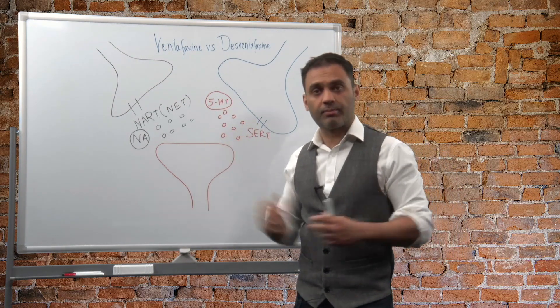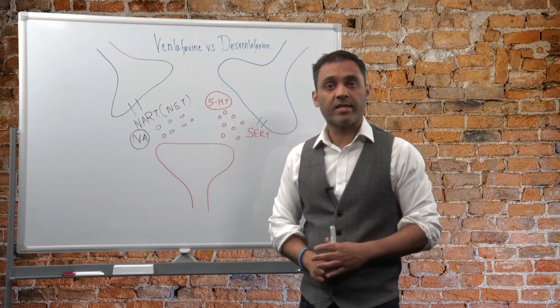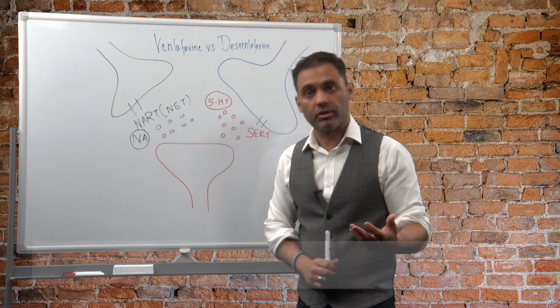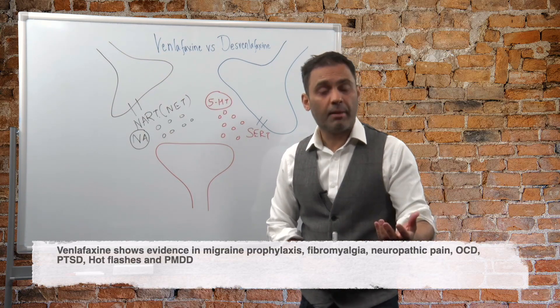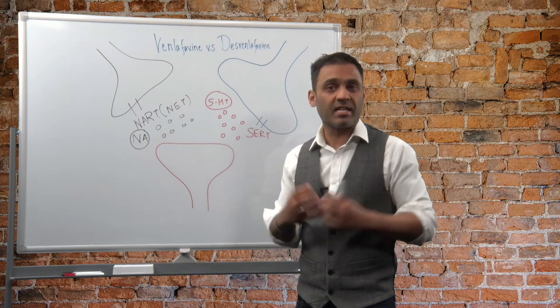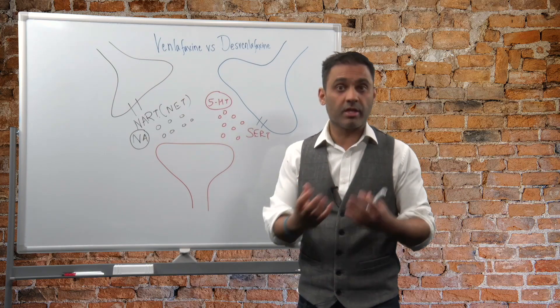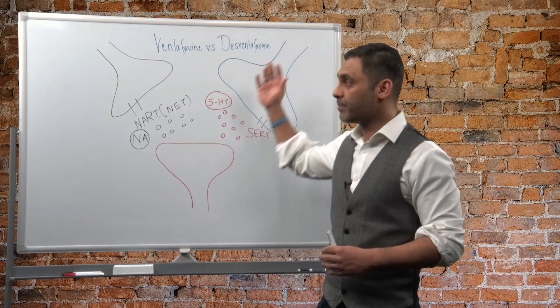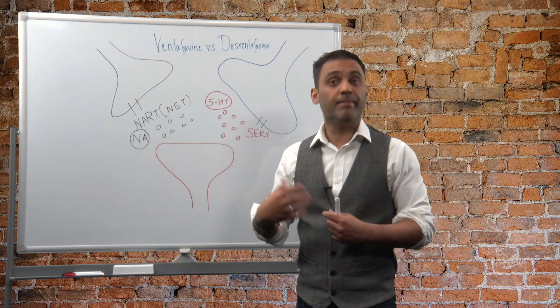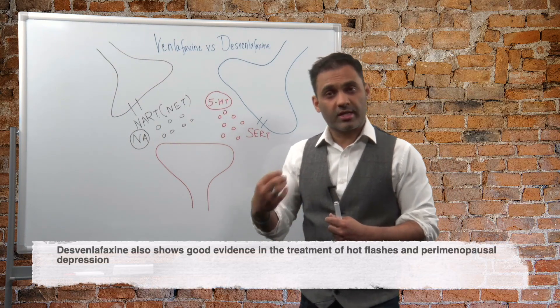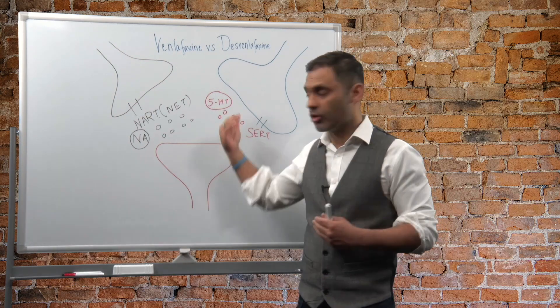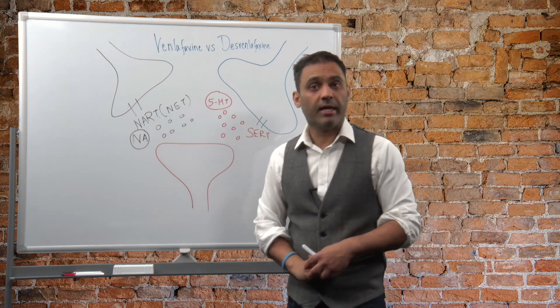So therefore, in clinical practice, venlafaxine is evidence based in not only major depressive disorder, but also in anxiety disorders, social phobia, in premenstrual dysphoric disorder. And that's because at lower doses, it has properties of an SSRI. SSRIs are also evidence based in these conditions. Whilst desvenlafaxine predominantly is evidence based in major depressive disorder. Now, there's some evidence that in pain it may provide that benefit because of its stronger norepinephrine activity.